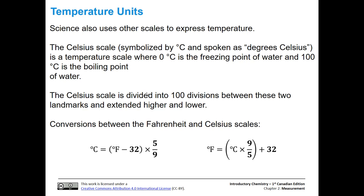There are two conversions between the Fahrenheit and Celsius scales. To convert to Celsius from Fahrenheit, take your Fahrenheit temperature, subtract 32 degrees, then multiply by five-ninths. To convert to Fahrenheit from Celsius, multiply your Celsius temperature by nine-fifths and then add 32 degrees.